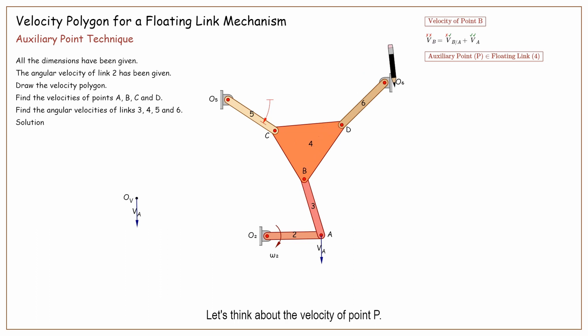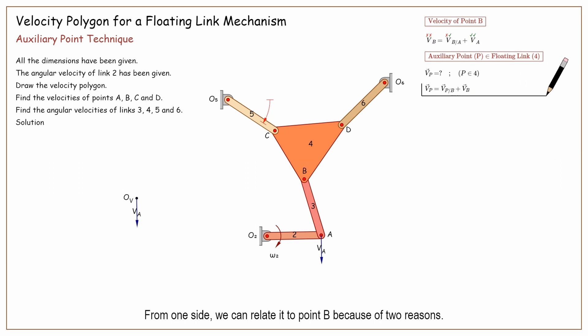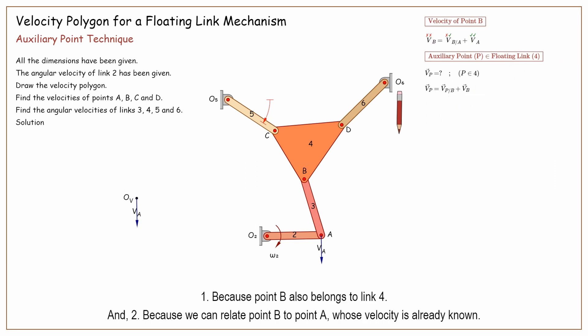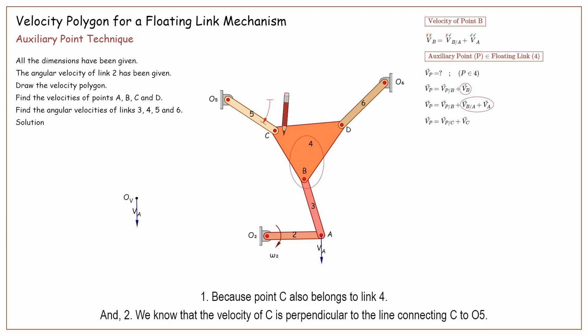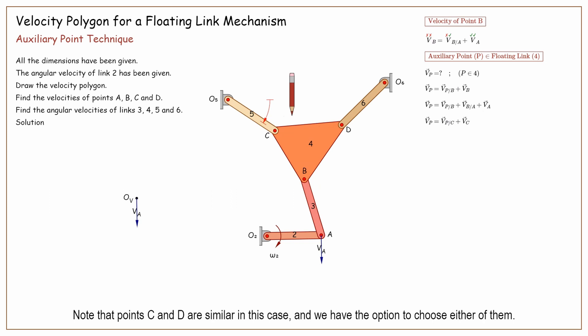Let's think about the velocity of point P. From one side, we can relate it to point B because of two reasons: number 1, point B also belongs to link 4; and number 2, we can relate point B to point A, whose velocity is already known. From the other side, we can relate point P to point C, again because of two reasons: number 1, point C also belongs to link 4; and number 2, we know that the velocity of C is perpendicular to the line connecting C to O5. Note that points C and D are similar in this case, and we have the option to choose either of them.